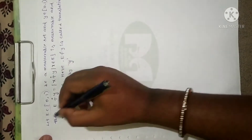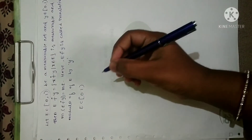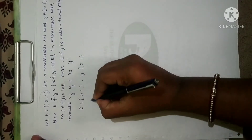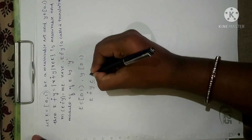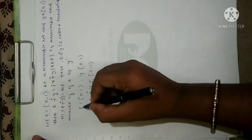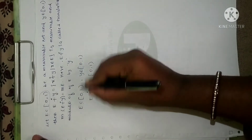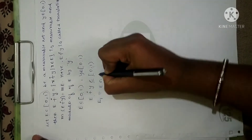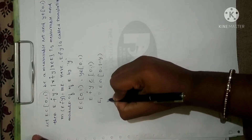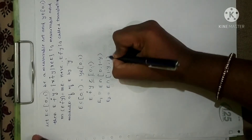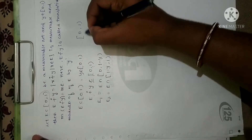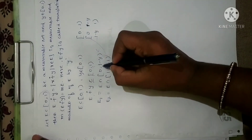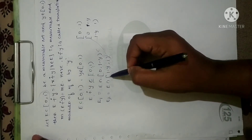Given: E is a subset of [0,1) and y belongs to [0,1). From these two conditions, E ⊕ y is contained in [0,1). Now let me define two sets E1 and E2: E1 = E ∩ [0, 1−y) and E2 = E ∩ [1−y, 1). I have split the interval [0,1) at the midpoint 1−y, taken intersections with E, and defined E1 and E2.